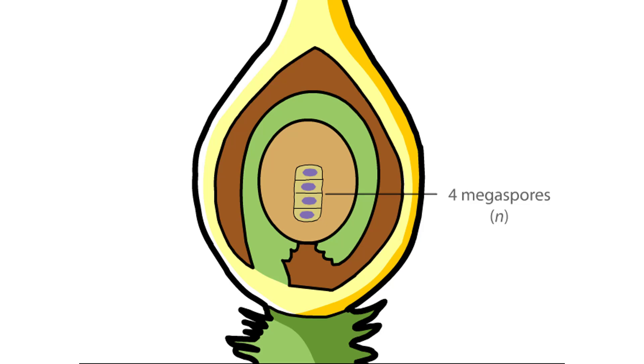In most species, three degenerate leaving one surviving megaspore. The one surviving megaspore then undergoes three rounds of mitosis to produce eight haploid nuclei.